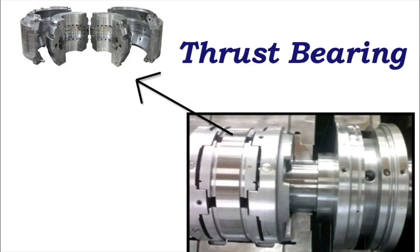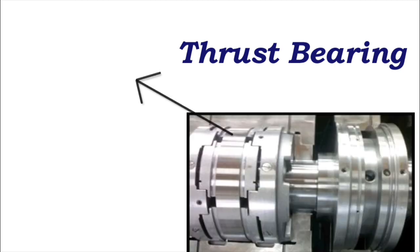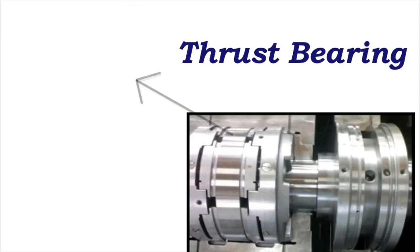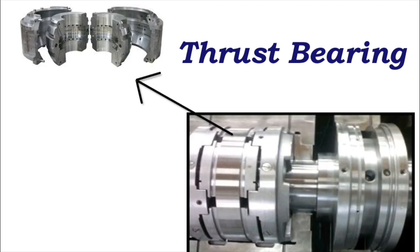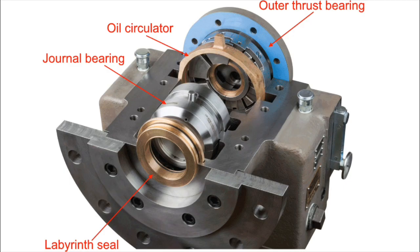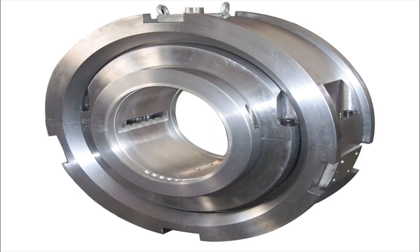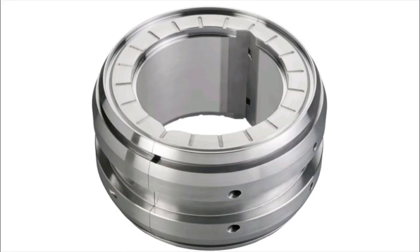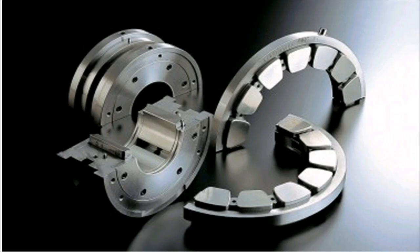Thrust Bearings. The main two purposes of thrust bearings are: to keep the rotor in an exact position in the casing, and to absorb axial thrust on the rotor due to steam flow. The thrust bearing is located on the free end of the rotor, or at the steam inlet of the turbine. The axial thrust force is very small for impulse turbines, due to the presence of pressure equalizing holes in the rotor disc to balance the thrust force generated across the disc.